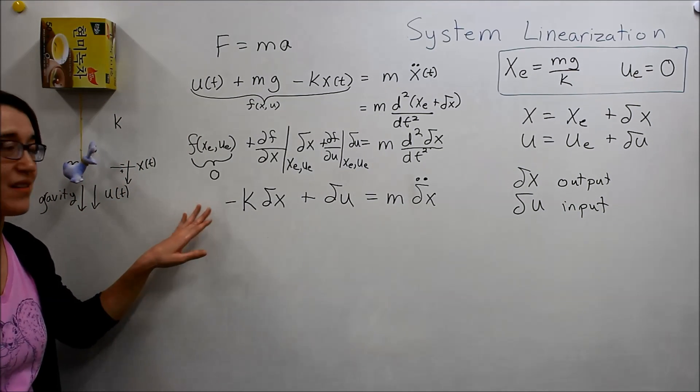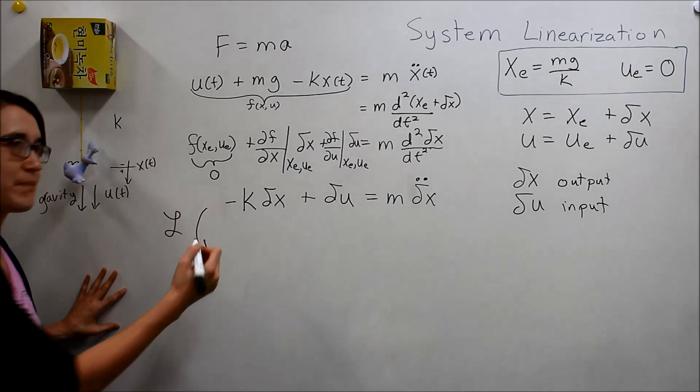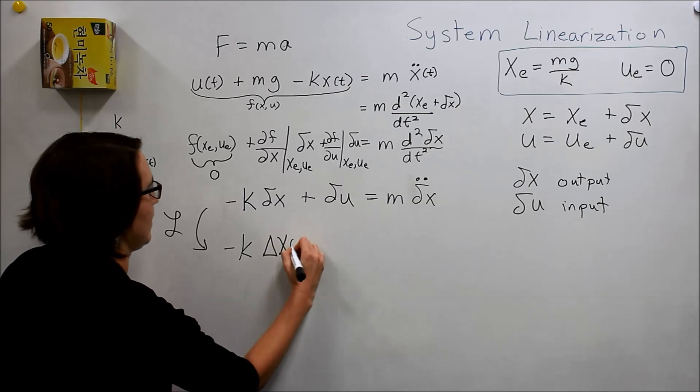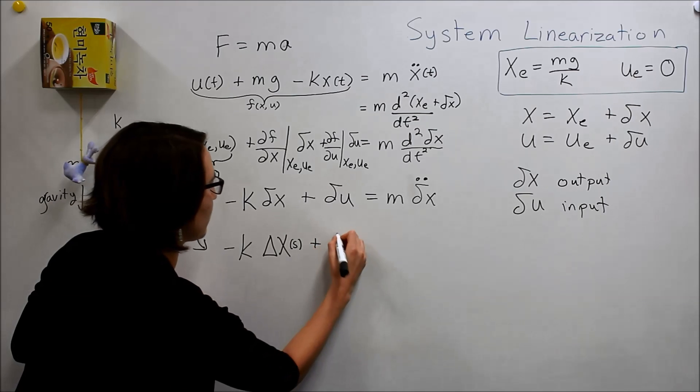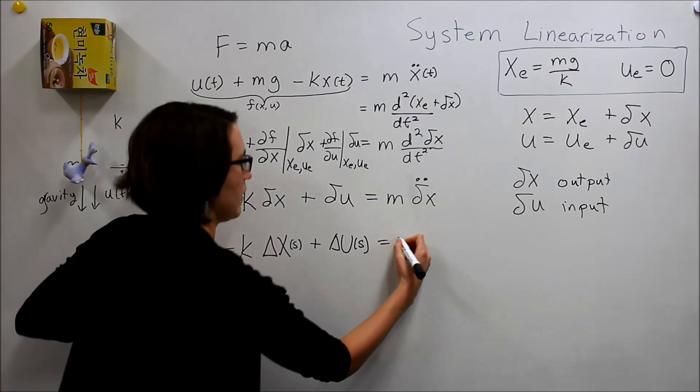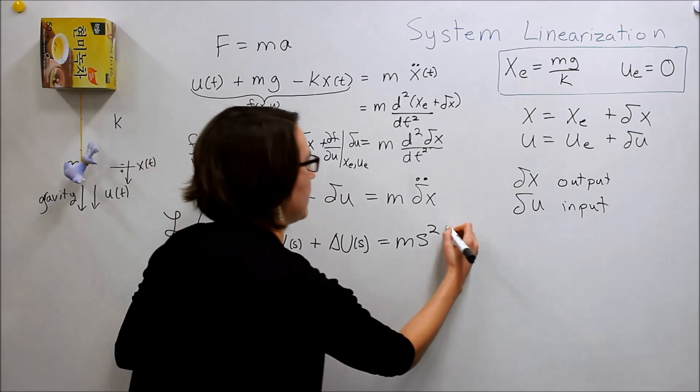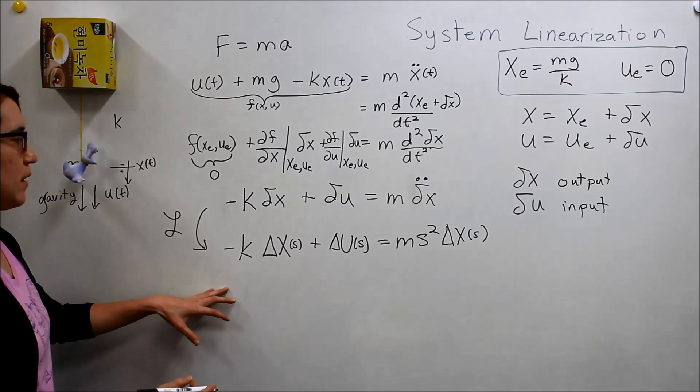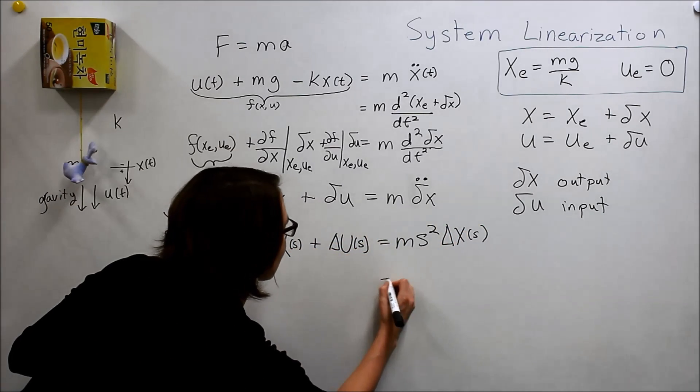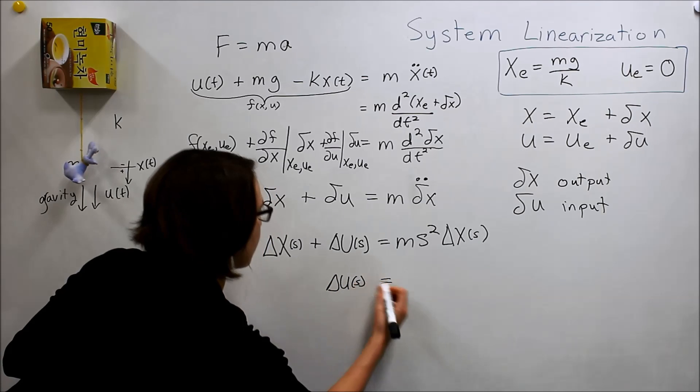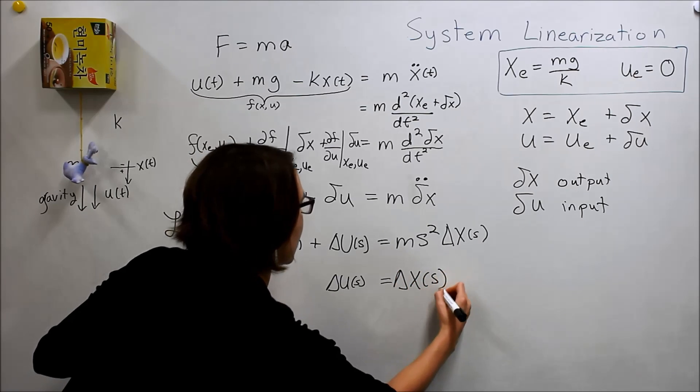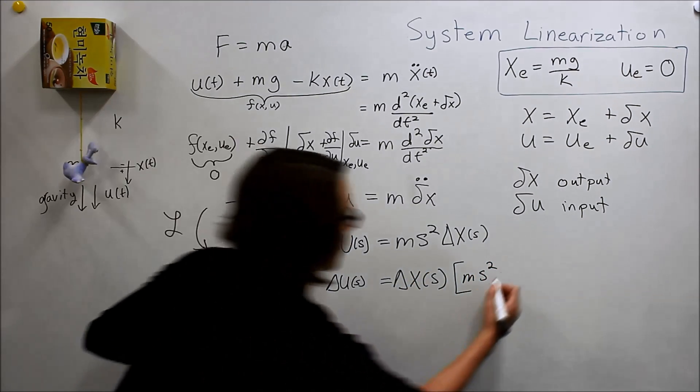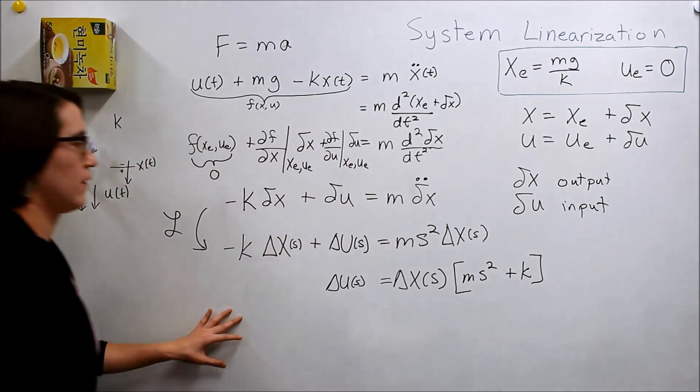So, now, we can take the Laplace transform of this linearized expression. So, let's do that. So, Laplace, we'll get a negative k. And this, we'll have to call it delta x of s here. We'll bring these s's back in. And then, this would be delta u of s. And then, m s squared, because of the double derivative. And delta x of s. Okay. So, let's move everything around.